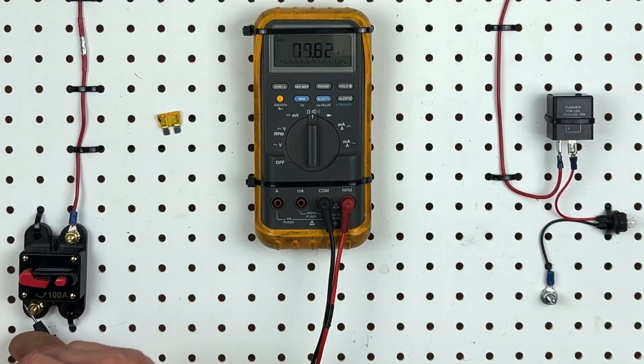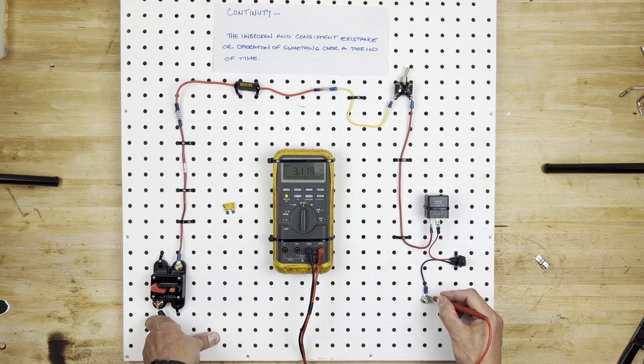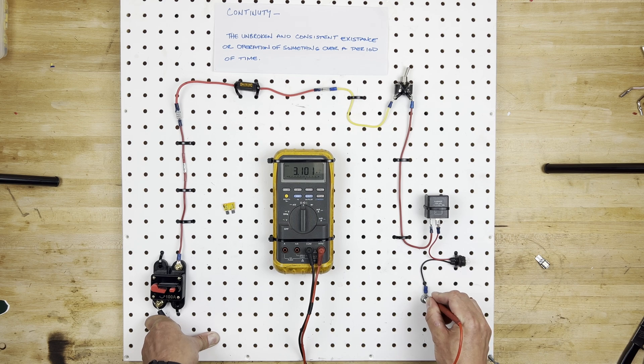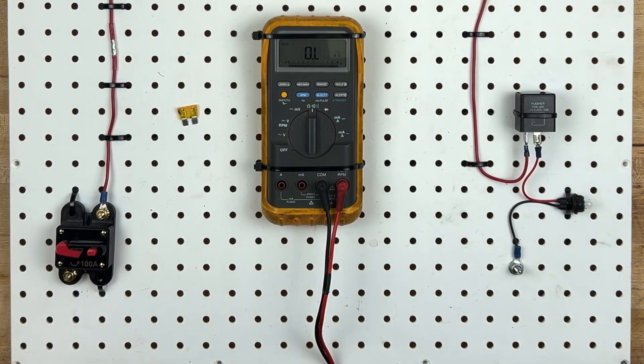So that means that the circuit is connected all the way through, through the flasher, through the bulb, to the ground side of the bulb. And that means that if we turn this on, this light bulb should actually work once we hook up the electricity. I guess it's time to try it.